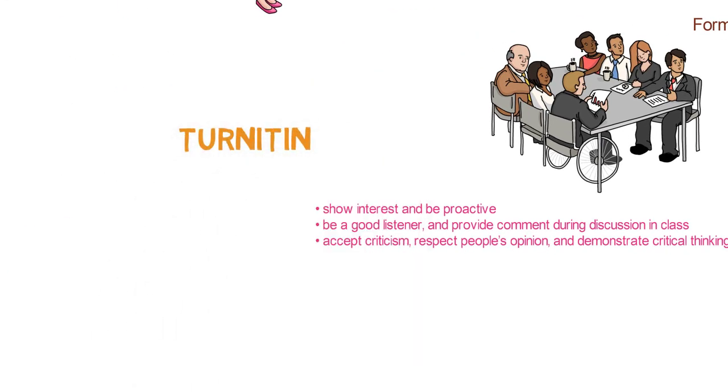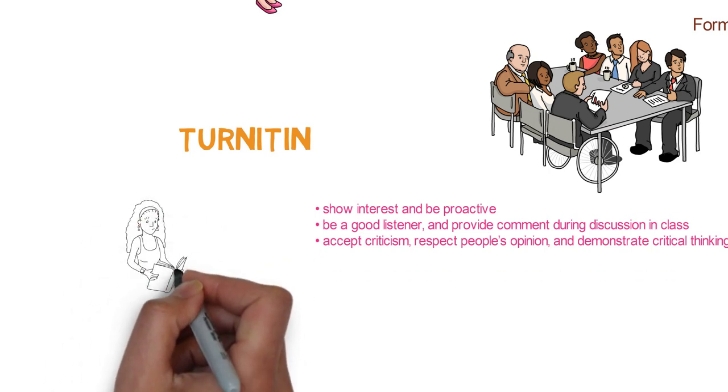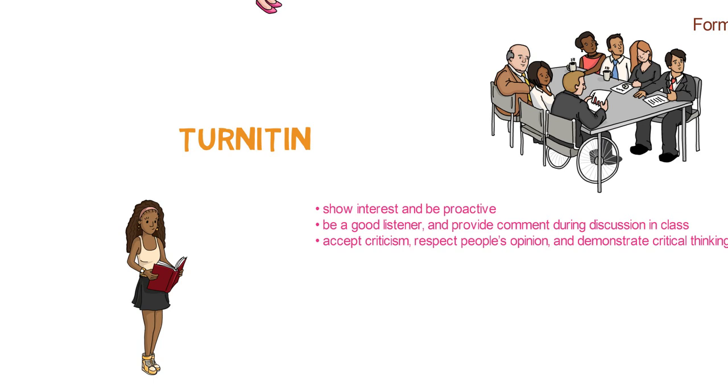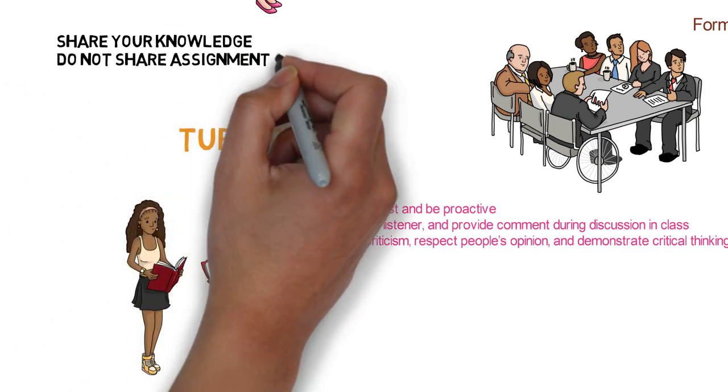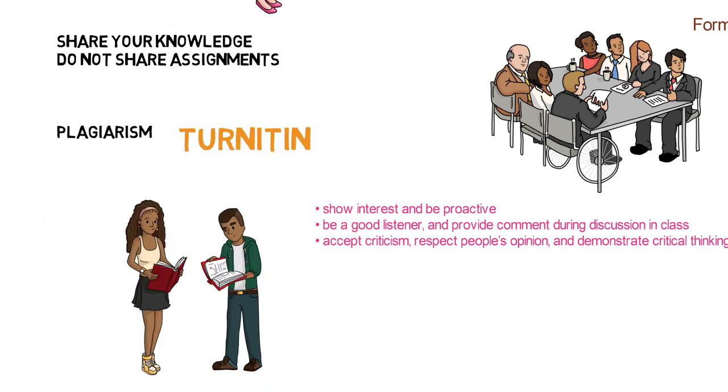Make sure you submit your assignment on Turnitin before submitting it on FLOW. Turnitin will help you make sure that your assignment is not similar to other published work at Flinders or on the World Wide Web. Remember, while you can share your knowledge with other students, you can't share assignments. Plagiarism and collusion will be detected and will result in negative consequences.